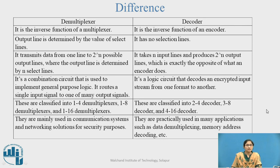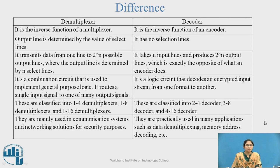Demultiplexers are classified as 1-to-4, 1-to-8, and 1-to-16. Decoders are classified as 2-to-4, 3-to-8, and 4-to-16. Demultiplexers are used in communication systems and networking solutions for security purposes, while decoders are used in applications such as data demultiplexing, memory address decoding, etc.